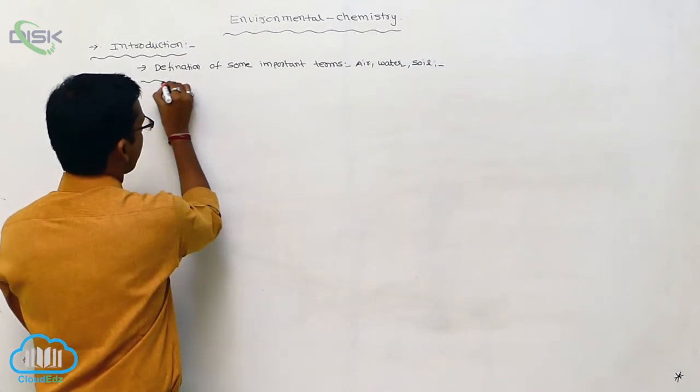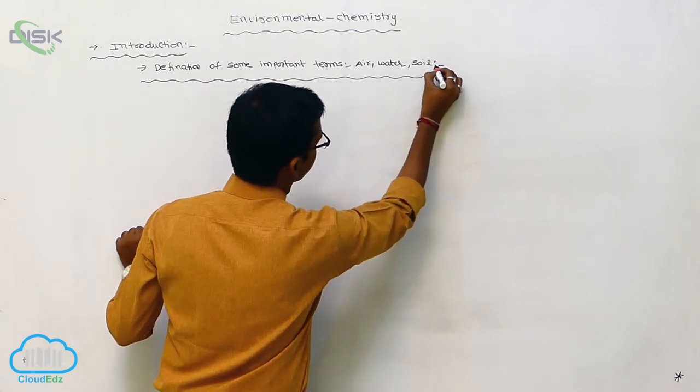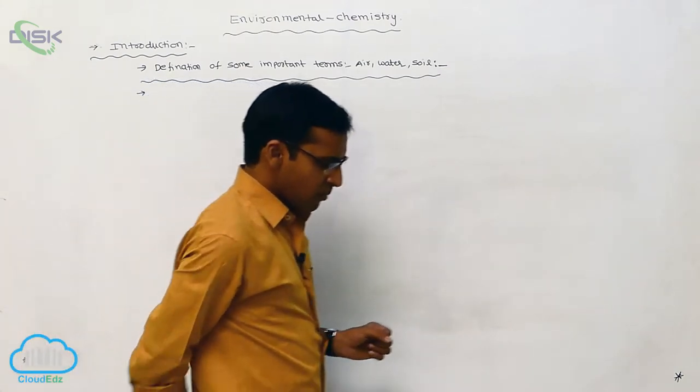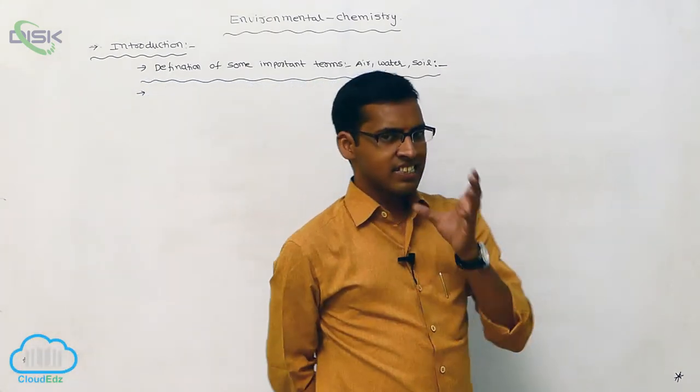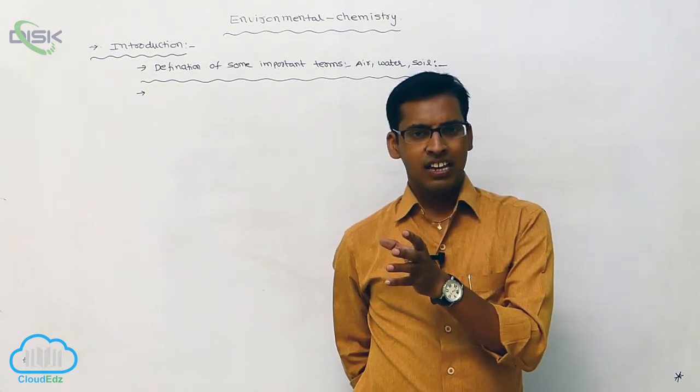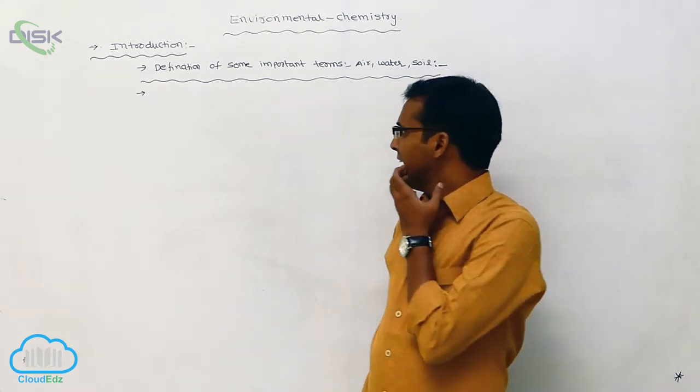The environmental chemistry is a science. It deals with chemical process involved around the environment. Generally the atmosphere, the atmosphere is surrounded around the earth or around the environment.